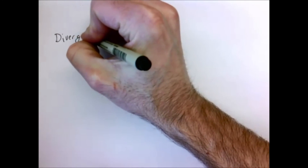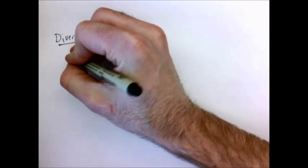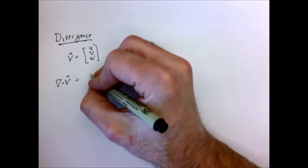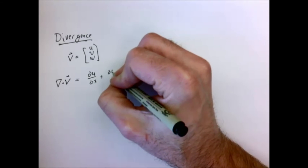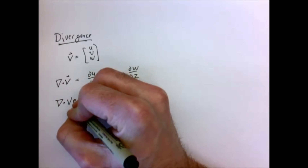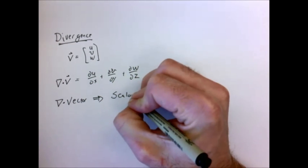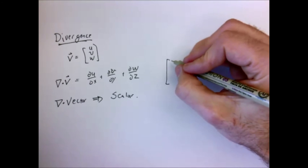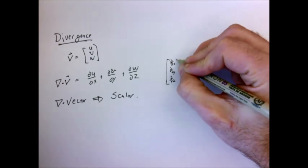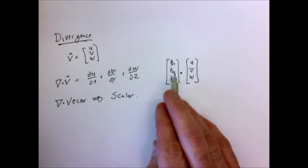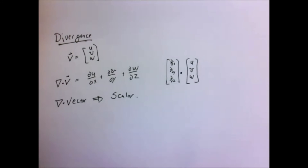The other type of derivative we'll talk about a lot is the divergence. Define the velocity vector with components u, v, w for x, y, z. The divergence is written as the gradient dotted with the vector: del dot V equals du/dx plus dv/dy plus dw/dz. We can only take the divergence of a vector quantity, and it gives back a scalar. Thinking of the gradient as a vector with x, y, z components, the dot product with u, v, w is just multiplying corresponding components and summing them — exactly this result.